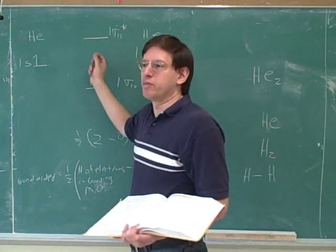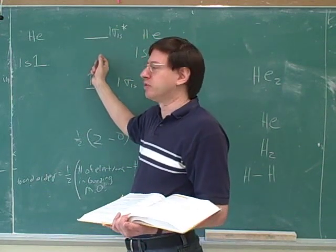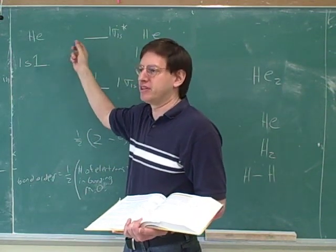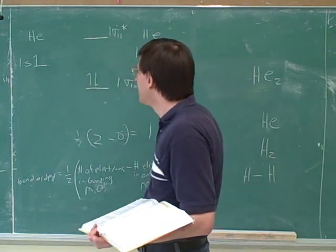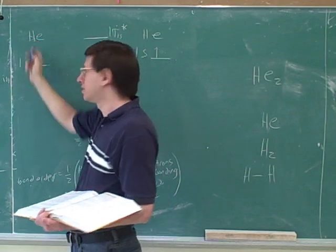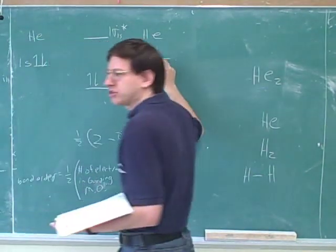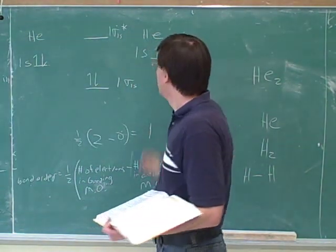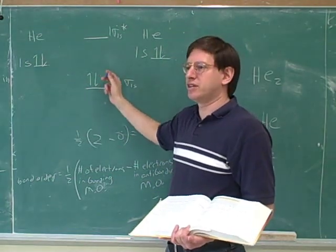Well, we would still have the same orbitals. I don't need to change my orbital diagram here. We still don't need to use anything from the second level or above. So these are the only orbitals that are worth drawing. But how many electrons is this helium atom going to contribute? And how many will this contribute?